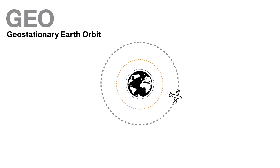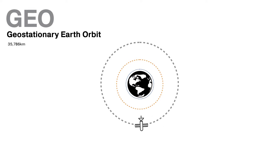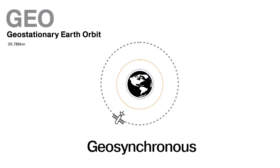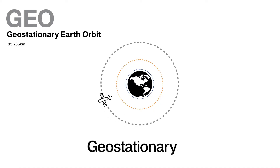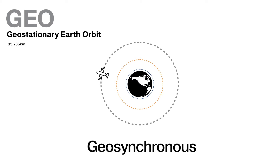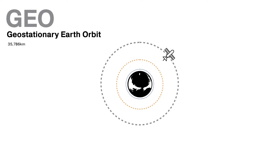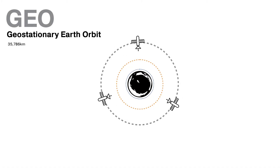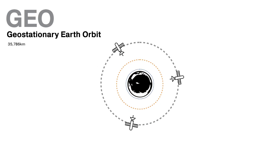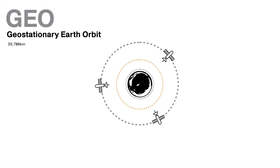GEO, or Geostationary Earth Orbit, is at an altitude of 35,786 kilometres. Sometimes you hear people use the terms geosynchronous and geostationary interchangeably. Geosynchronous means a satellite moves in sync with the rotation of the Earth, whereas geostationary orbit means the satellite remains exactly in the same place parked over the equator. Every geostationary orbit is geosynchronous, but not every geosynchronous orbit is geostationary. The further away from the equator you are, the more you'll require geosynchronous over geostationary. GEO offers planet-wide coverage with just three satellites, making geostationary orbit the backbone of data over satellite communication.